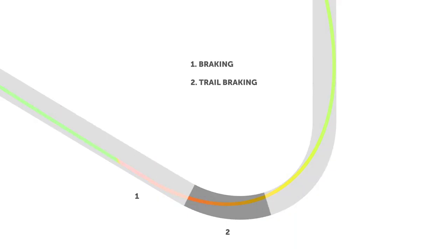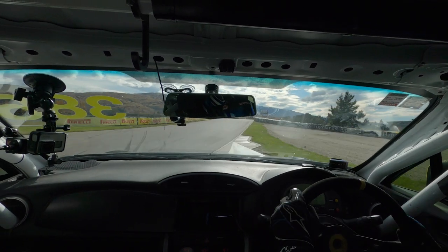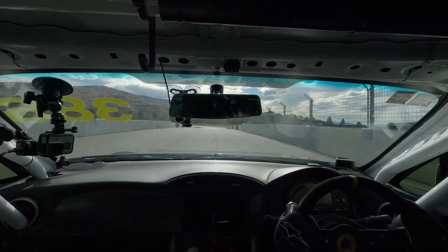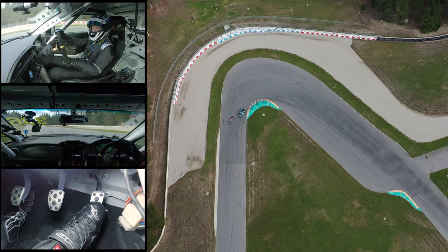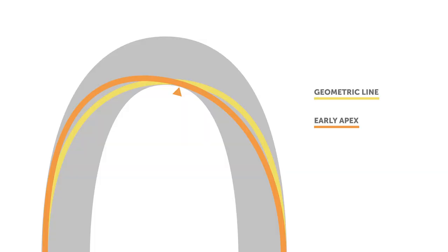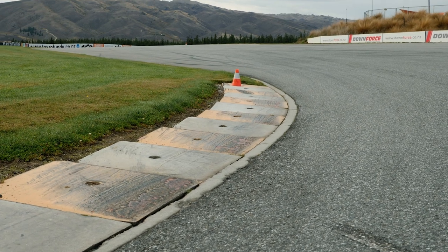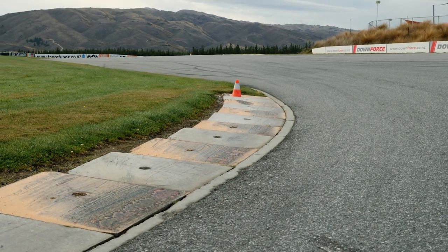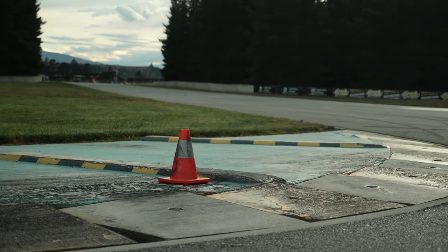You'll also learn how to break down each corner into its phases, allowing you to analyse exactly where you can gain speed and lower lap times through each corner in an analytical way. You'll also gain a deep understanding of the apex and how the apex location will be affected by the next section of track, as well as how to look at a circuit and quickly figure out which corners need to be prioritised over others in the hunt for lower lap times.